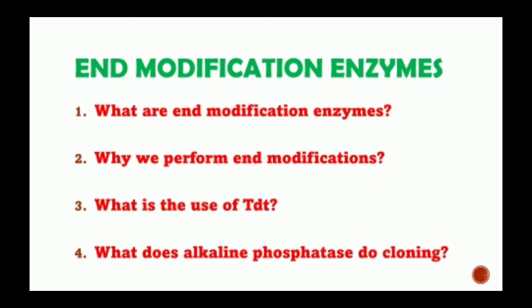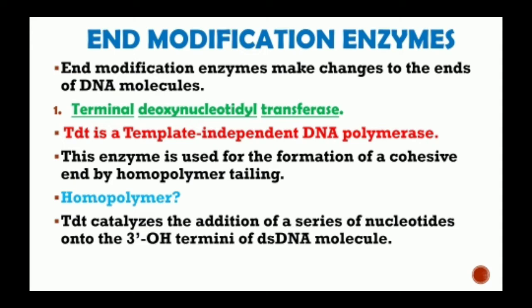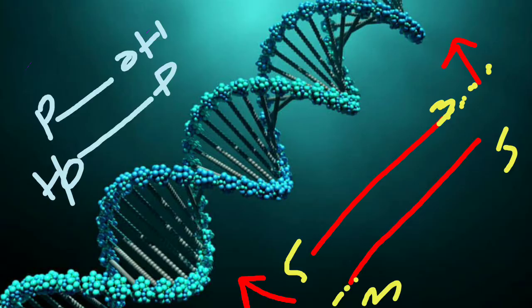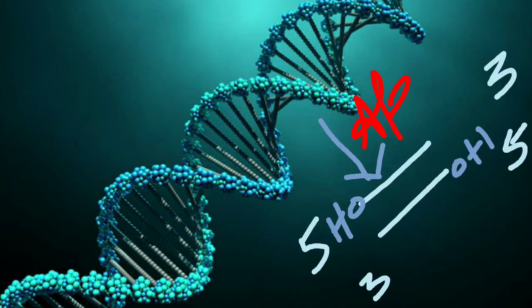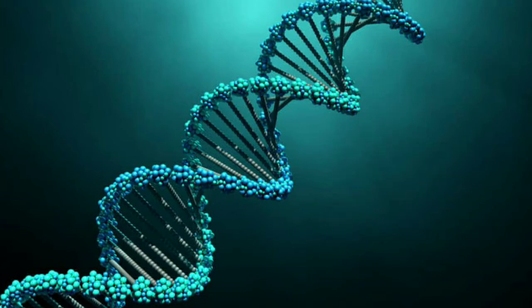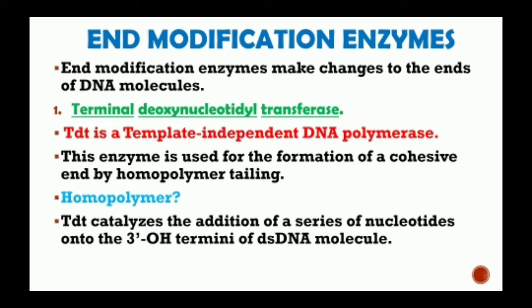There are numerous enzymes that modify DNA molecules by addition or removal of specific chemical groups. These are known as end modification enzymes. In other words, these are enzymes that make changes to the ends of a DNA molecule. If we want to make changes at the ends of a DNA molecule, we use end modification enzymes.